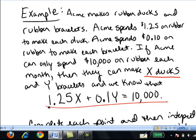They spend $1.25 per duck times the number of ducks x plus 10 cents per bracelet times the number of bracelets y. And that all adds up to a total of $10,000 that they can spend. So this is the equation we're going to work with.